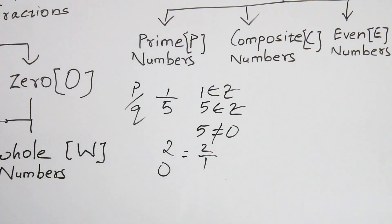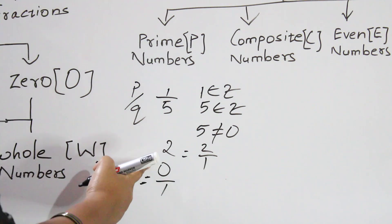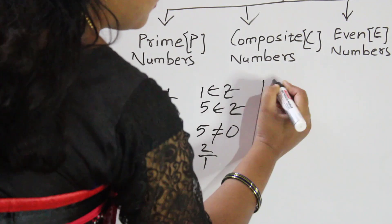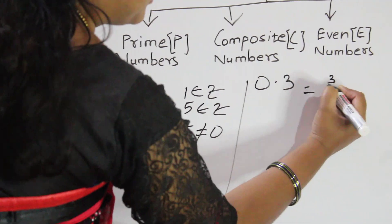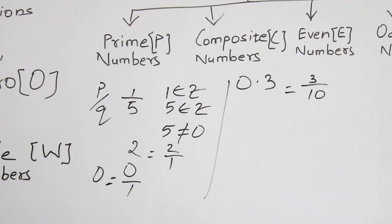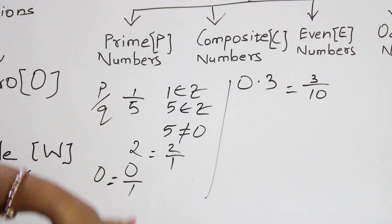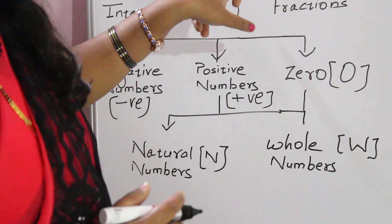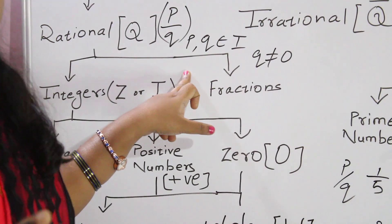We can also take 0. Is 0 a rational number? Yes, because 0 = 0/1, where 0 and 1 are both integers and 1 ≠ 0. Example: 0.3 is also rational because 0.3 = 3/10, where 3 and 10 are both integers and 10 ≠ 0. So 1/5, 2, 0, and 0.3 are all rational numbers — any number expressible as P/Q with integer numerator and denominator, and denominator not zero.